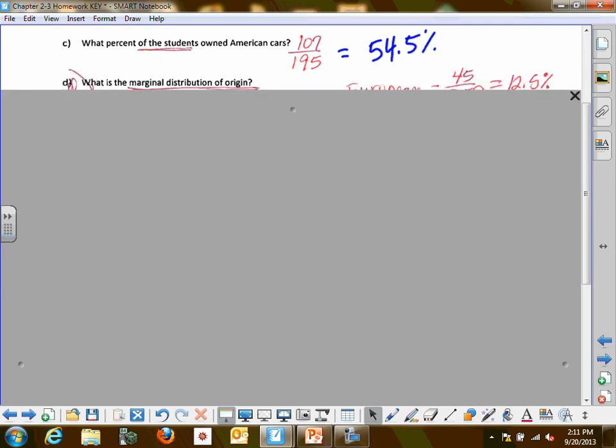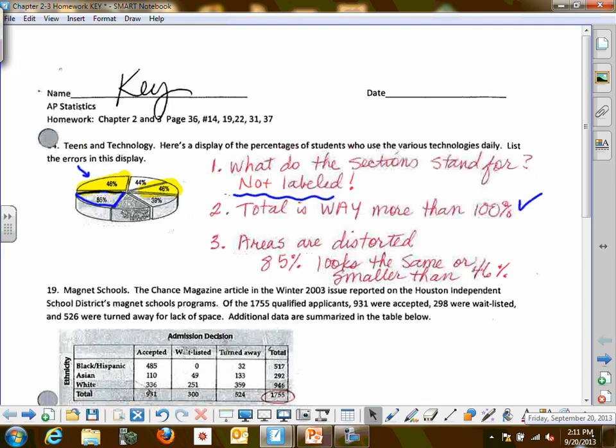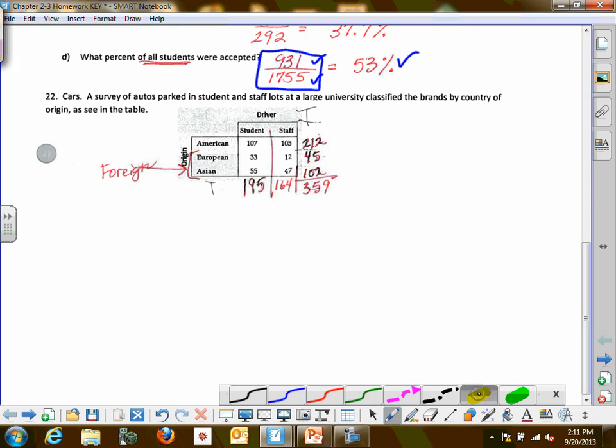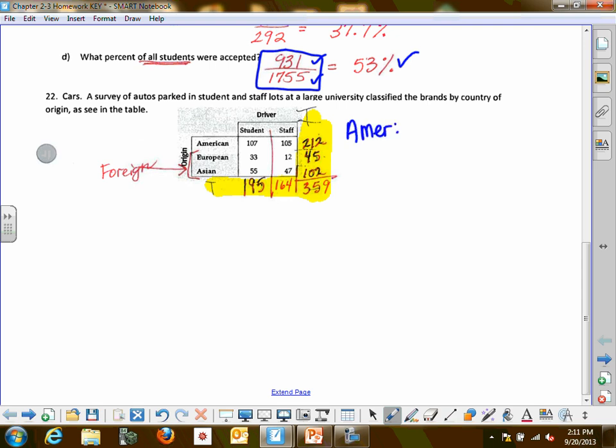The first one is marginal. What is the marginal distribution of origin? Let's go back here and identify the marginal. Marginal is going to be where? The totals. So marginal, if it says marginal of origin, then your values are going to be based on the origin. So the American total, total overall for the European, the total overall for the Asian. For American it's that 212 over 359, and for European 45 over 359, and for Asian 102 over 359.